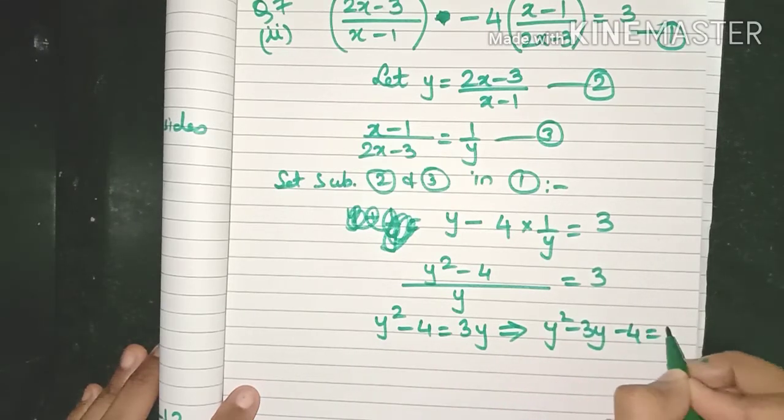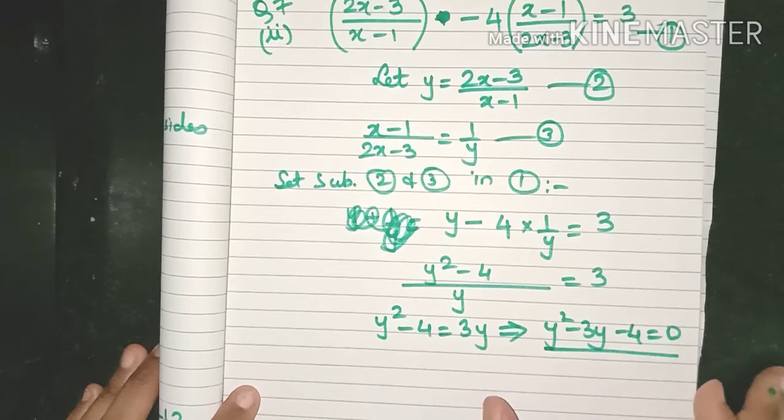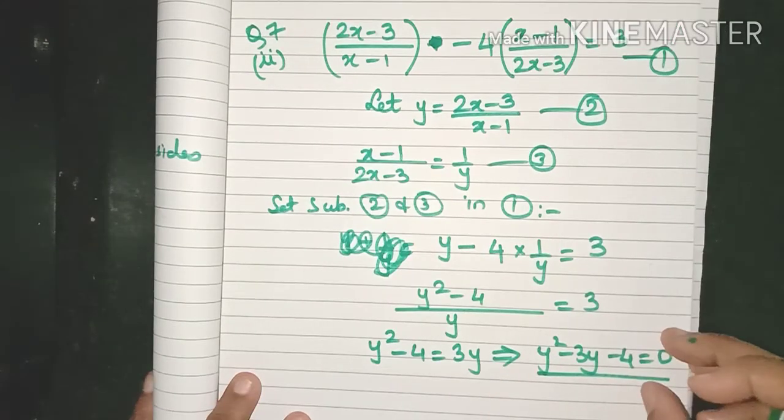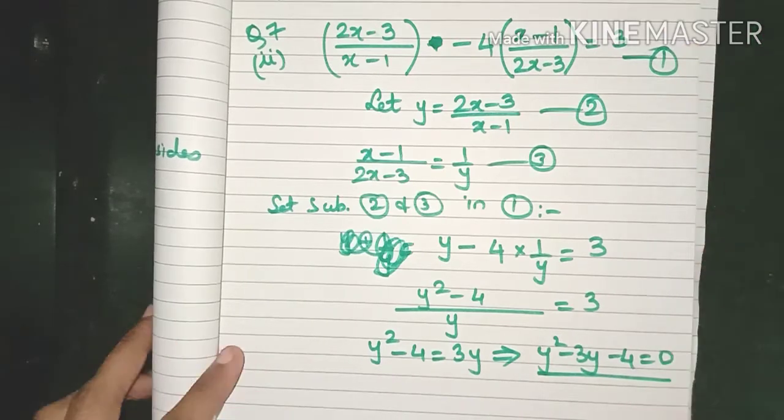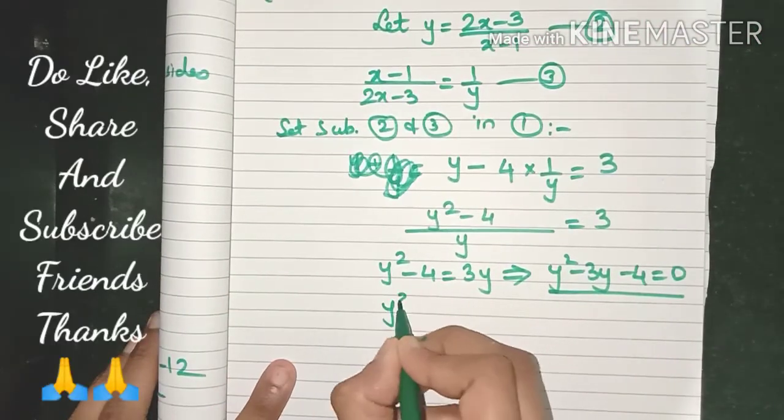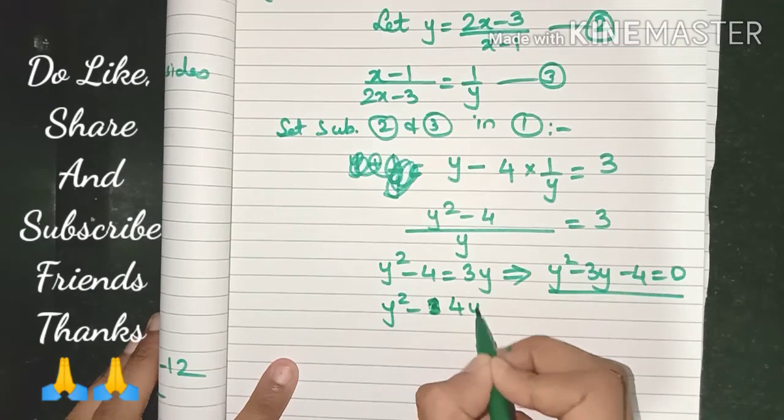So here we are. We have been able to now get a quadratic equation in y. This equation is so much easier to solve than our original equation. So I'm sure you know how to factorize this. We will get y² - 4y.